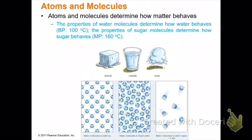It's important to learn about atoms and molecules because they determine how matter behaves — meaning their physical and chemical properties. For example, the properties of water molecules determine how water behaves. Water behaves differently at its boiling point and melting point. In solid ice, water molecules are densely close-packed in fixed positions, whereas in steam the molecules are free to move around. The same is true for sugar and other molecules.